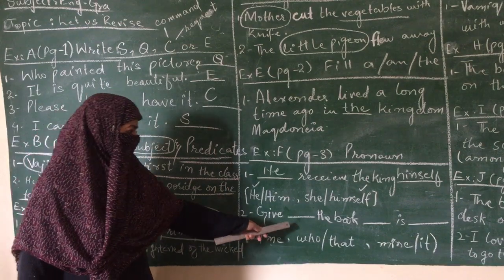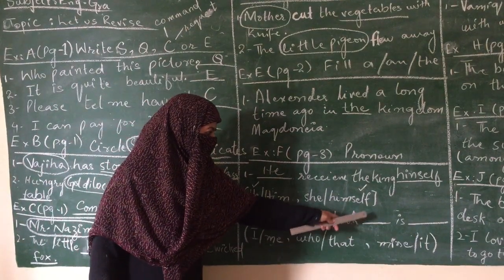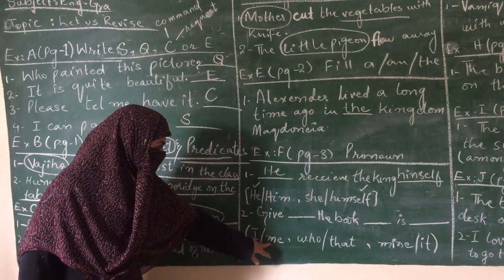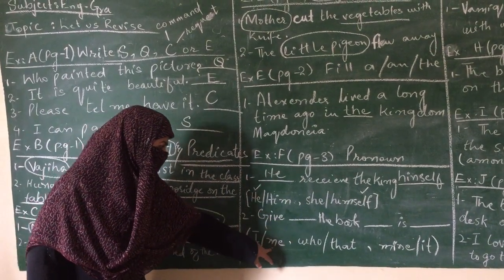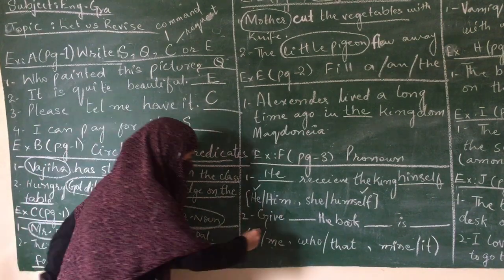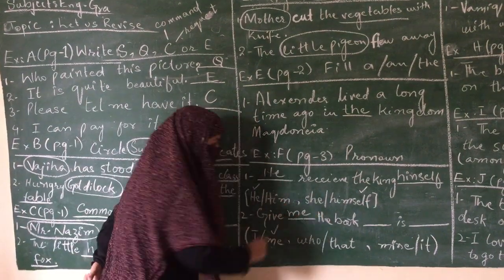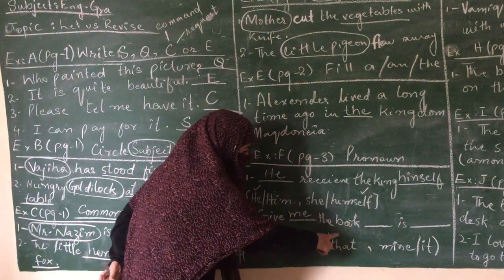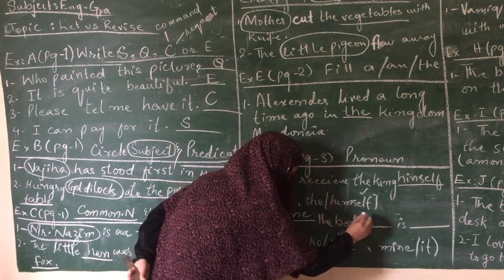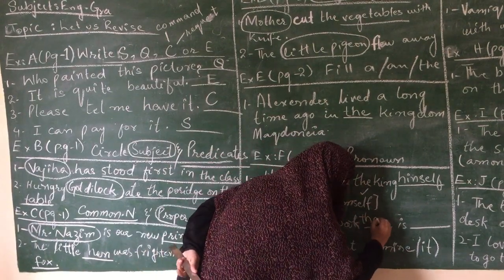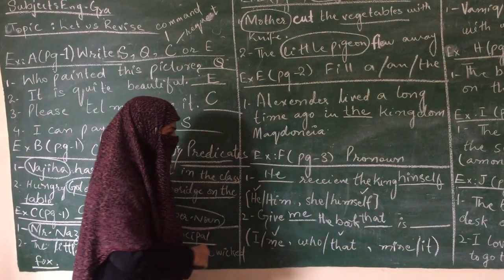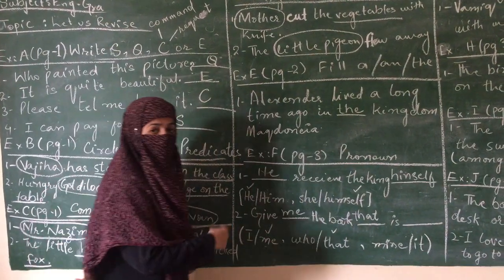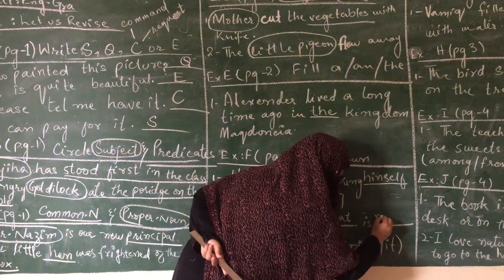Second example: Give dash the book dash is dash. Now we have three blanks in this sentence: I, mine, me. Give me the book. This book should be given to me. Give me the book. Now you can say the book should be given to whom? Yes. So we are talking about the book in this sentence. The book is mine. When you are told that the book belongs to you.